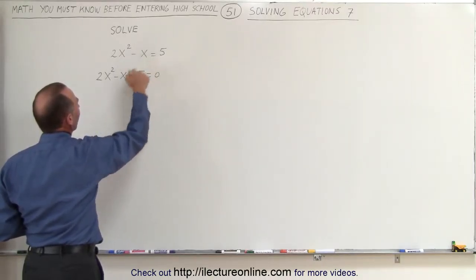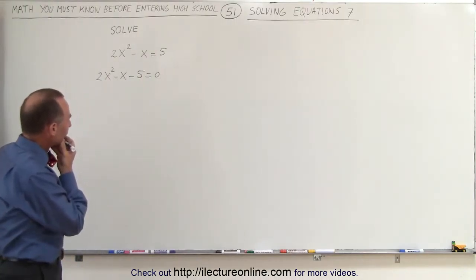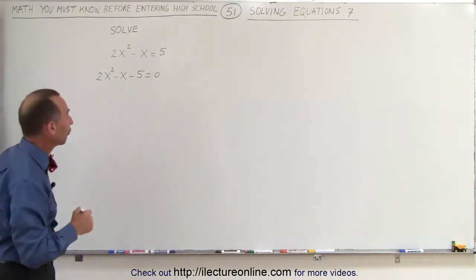Remember that when you cross the equal sign, the sign changes. Now, that doesn't look like something we can factor, which means we're going to have to use the quadratic formula.